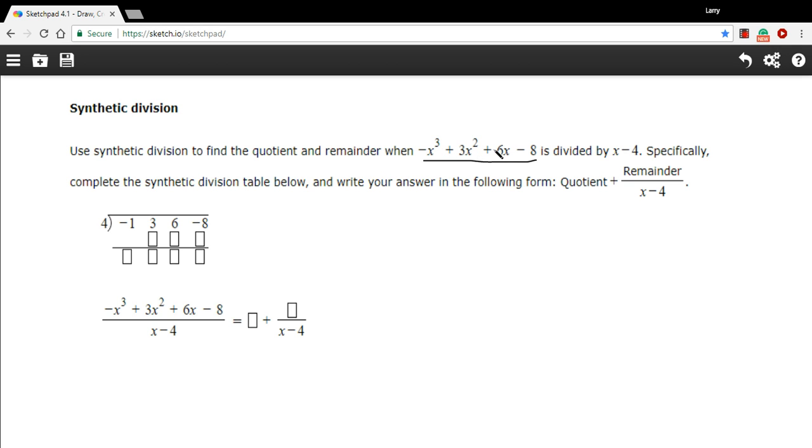Here we have the third power, the second power, the first power, the number, which you can think of as the zero power of x. So these are all the powers in descending order, so that looks good.